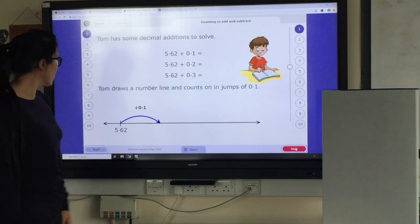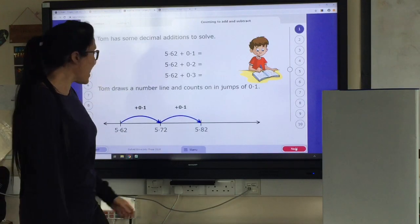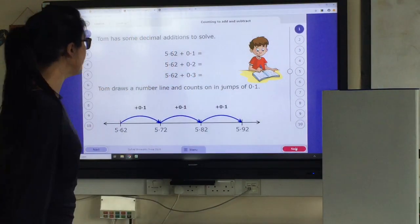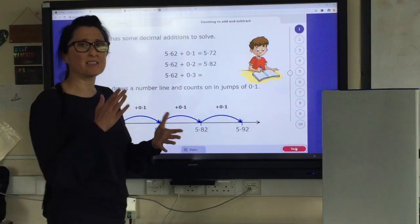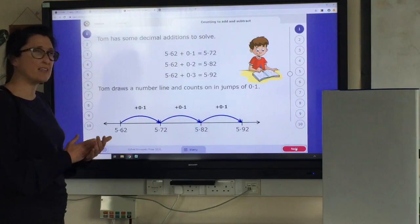So 5.62 add 0.1 becomes 5.72, which becomes 5.82, which becomes 5.92. Again, keep bringing it back to that place value knowledge. It's so important. Keep thinking about the place value.